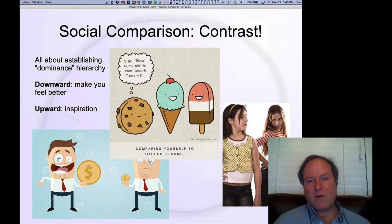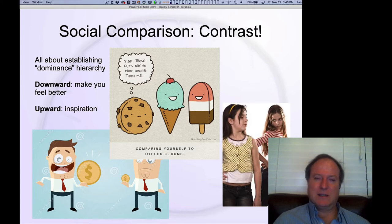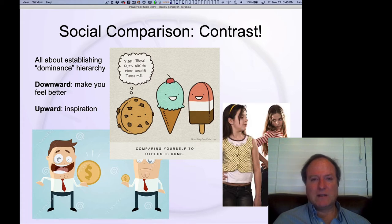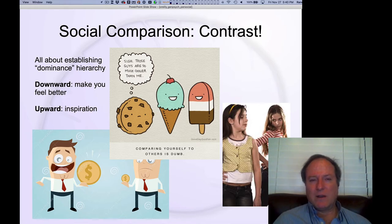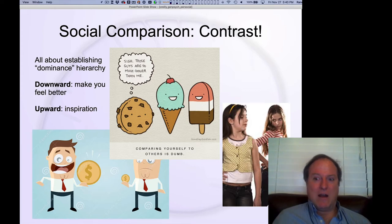The typical form of social comparison is downward social comparison. Basically, if you want to make yourself feel better, you look for somebody who you think is going to be evaluated as lower on some scale — whatever it is: popularity, looks, intelligence, athletic ability, whatever dimension you're trying to evaluate yourself on. You will typically find yourself looking down at somebody else to sort of prop yourself up. That's downward social comparison.